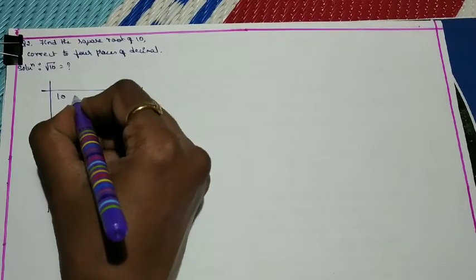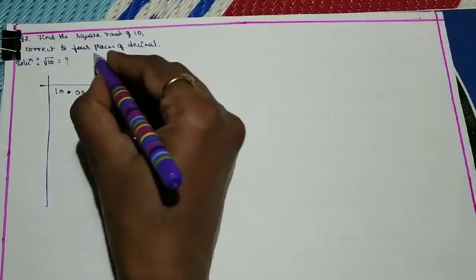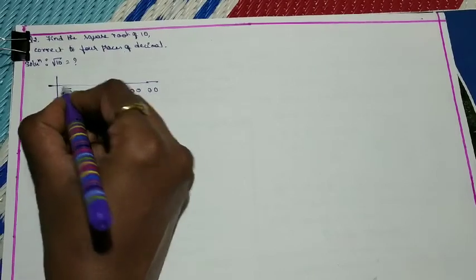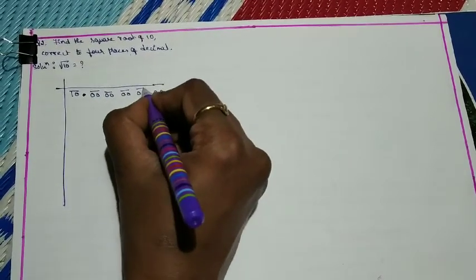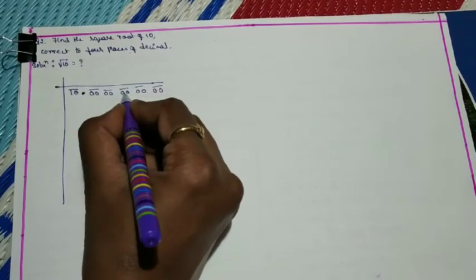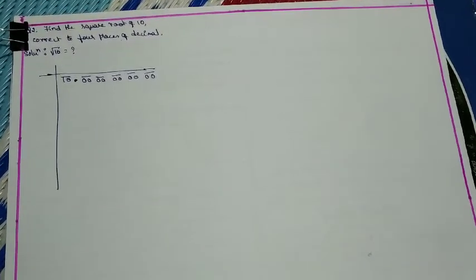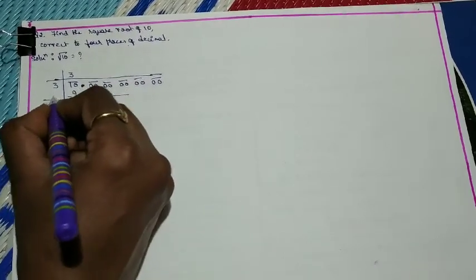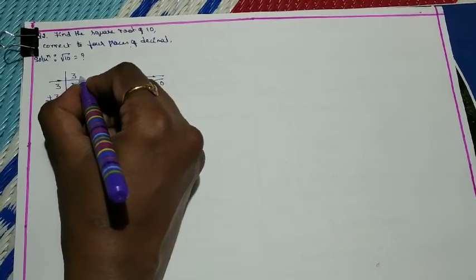Write 10 as 10.0000000000. Before the decimal, make periods from right to left; after, from left to right — giving one whole-number period (10) and five decimal periods. The nearest perfect square to 10 is 9 (3²). Subtract: 10 − 9 = 1. Add the divisor to get 6. Move to the decimal part and place a decimal point in the quotient.